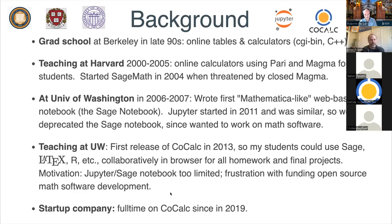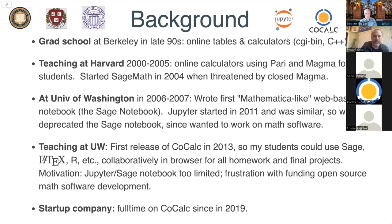One thing I kind of skipped over is that I really wanted to work on math software all the time, not web development, but the web development to build CoCalc seemed necessary. I also got really frustrated finding funding for working on open source software. I hoped that by building something that would benefit a lot from open source math software, I could later fund such work. That hasn't happened as much as I would like yet — it's been helpful, but it's taking longer than expected.